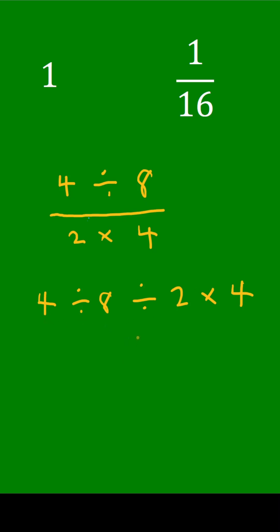And when we do that, we're going to end up with 1. We'll have 1 half divided by 2 times 4, which will give us 1 fourth times 4.